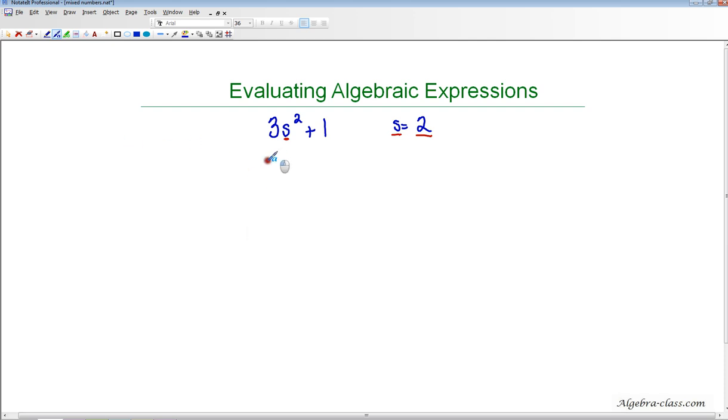So we're going to start by bringing down the 3. And in place of the s, our variable s, I'm going to substitute what s is equal to. So s is equal to 2. And then I'm going to bring down the rest of the problem exactly as it's written. So all I've done in my first step is substitute 2 for the variable s.